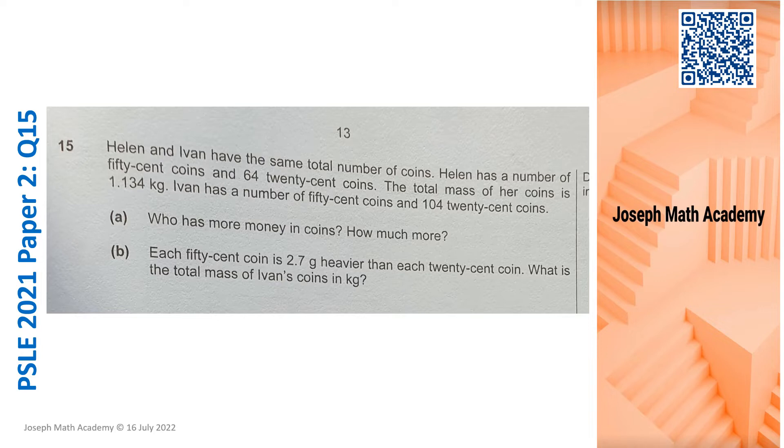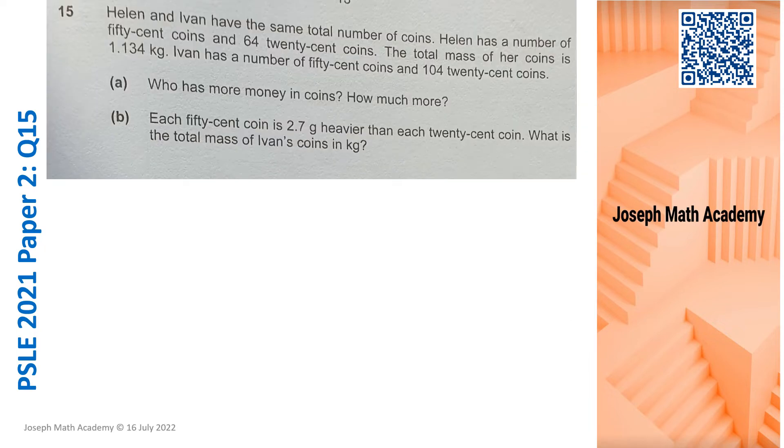I'm going to move on to solving question 15. Helen and Ivan have the same total number of coins. We know that Helen has 50 cent coins and 64 20 cent coins. We are not sure how many 50 cent coins so I'm going to represent this using a system. For Helen, I'm going to use her initial H to represent her name. She has an unknown number of 50 cent coins and we know that she has 64 20 cent coins.